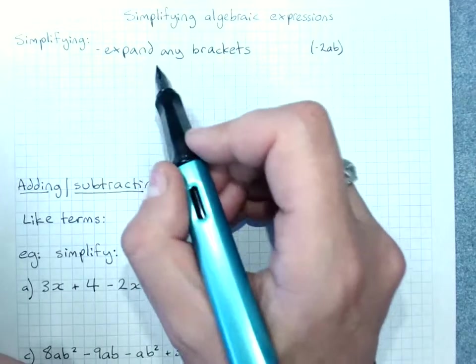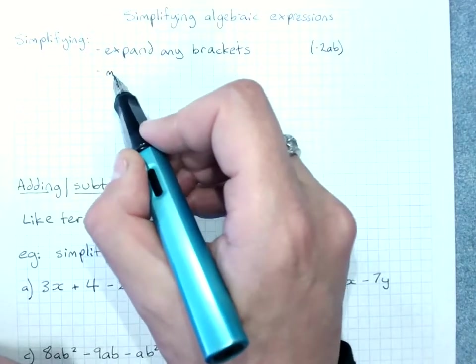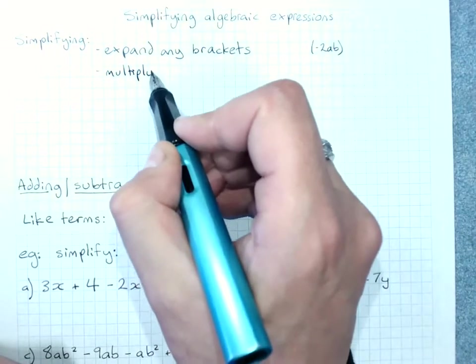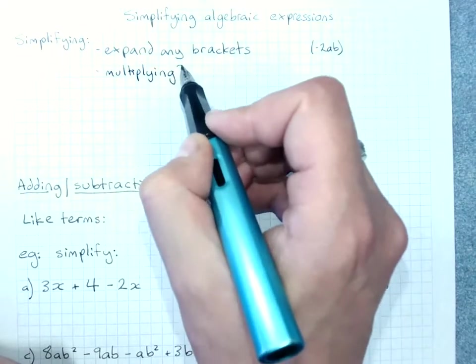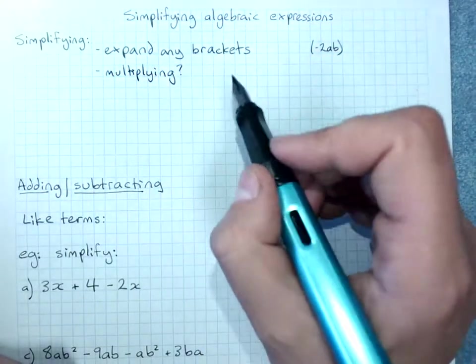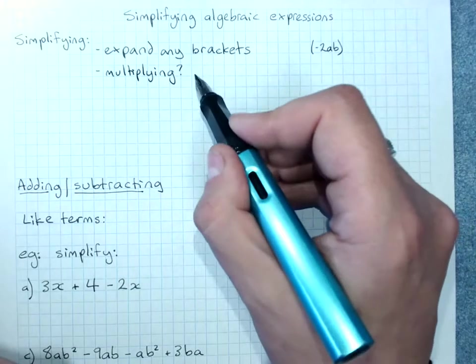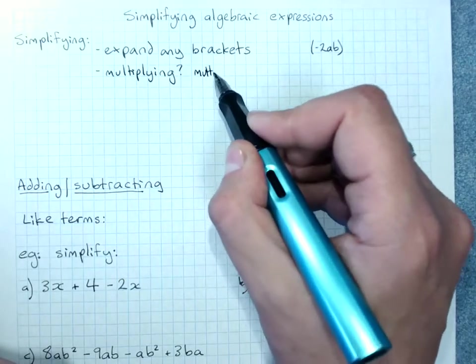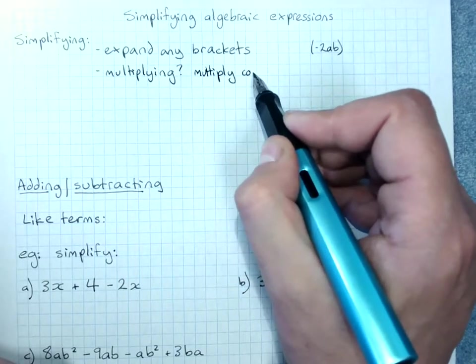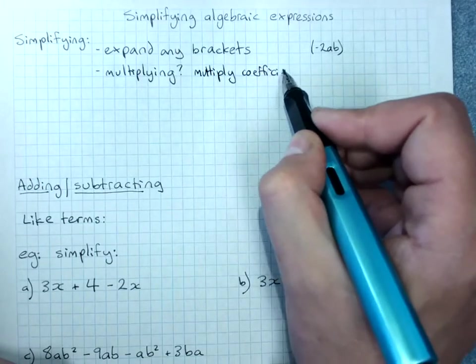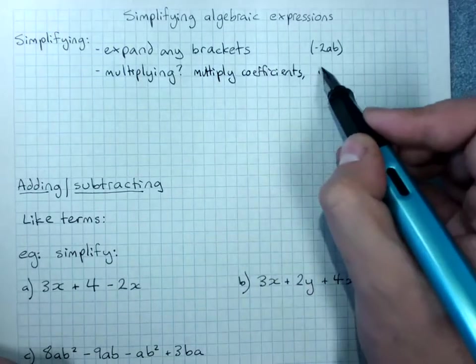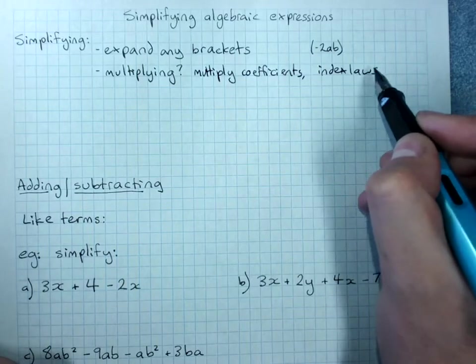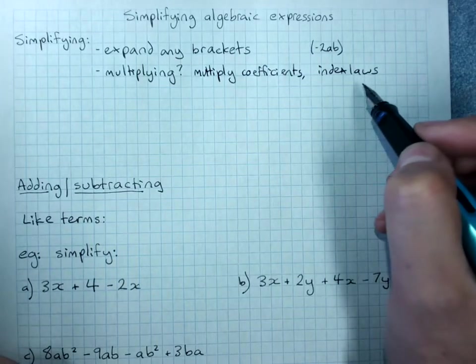Expand any brackets. Now if you're multiplying, and we'll go through this in more depth as we go through, then you multiply the coefficients and use index laws for multiplying the pronumerals.